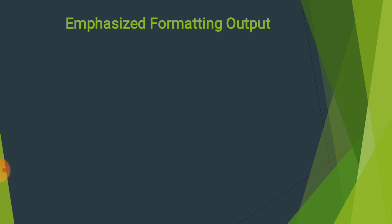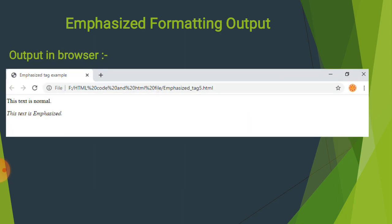Emphasize formatting output — output in browser: 'Emphasize text example' title show हुआ। 'This text is normal' जो paragraph का p tag का example था, और 'This text is emphasize' जो em tag use किये थे — उसका output browser में italic text की तरह आया है।